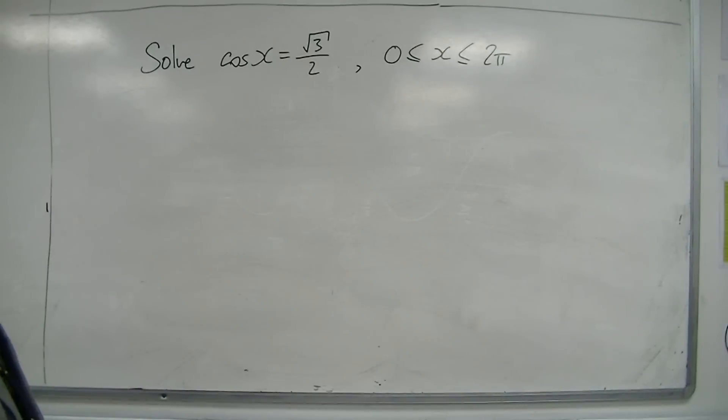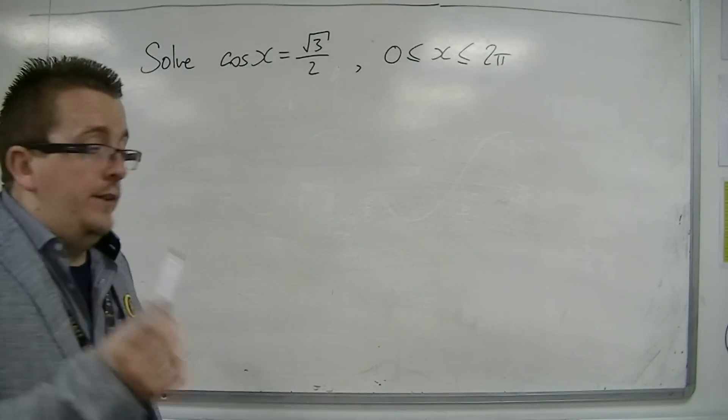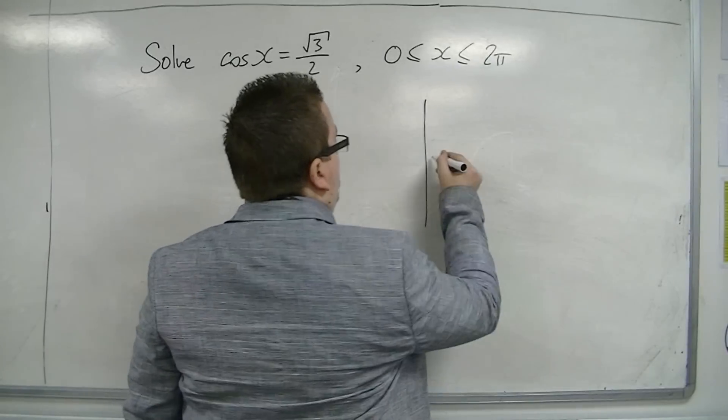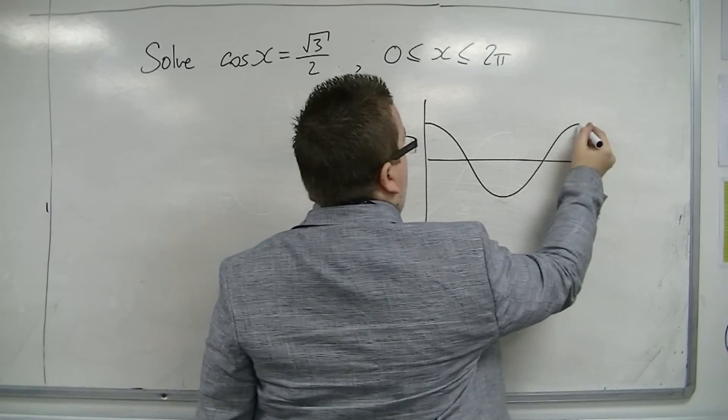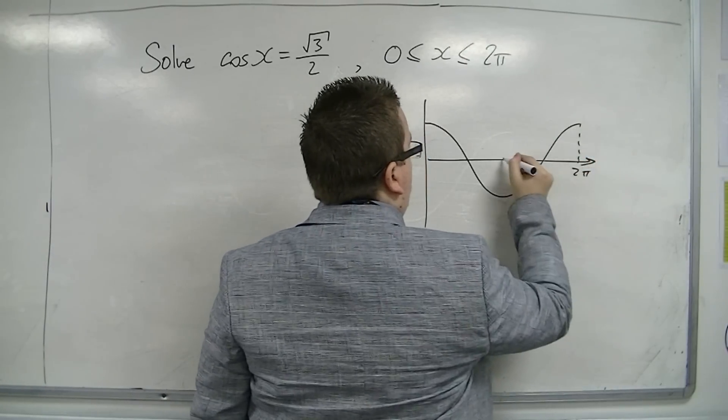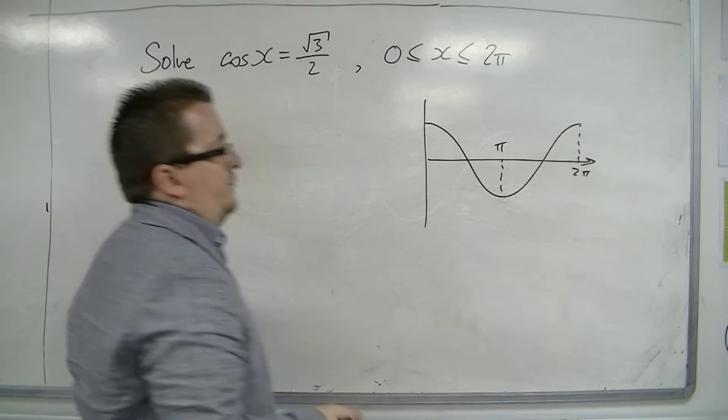So, cos x equals root 3 over 2. First things first, sketch cosine between 0 and 2π. Okay, only needs to be very quick like that. There's 2π, there's π.